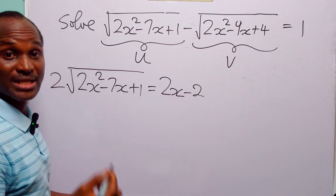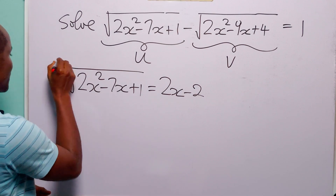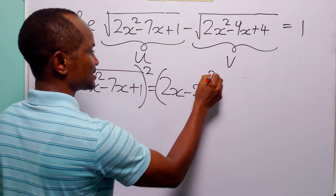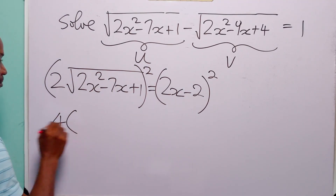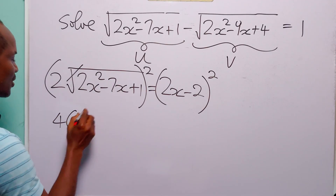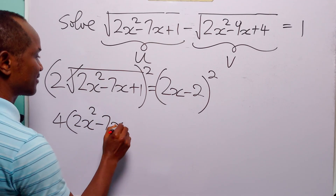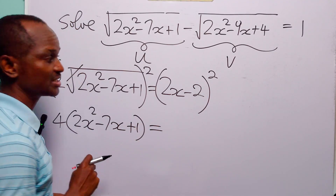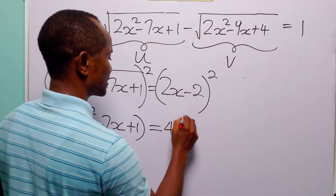And of course, now we can square both sides of this equation. So we have this squared is equal to 2x squared. 2 squared is 4. The square is going to take care of the square root, leaving us with 2x squared minus 7x plus 1. Now on the right-hand side of this equation, we have 2x squared, that is 4x squared.